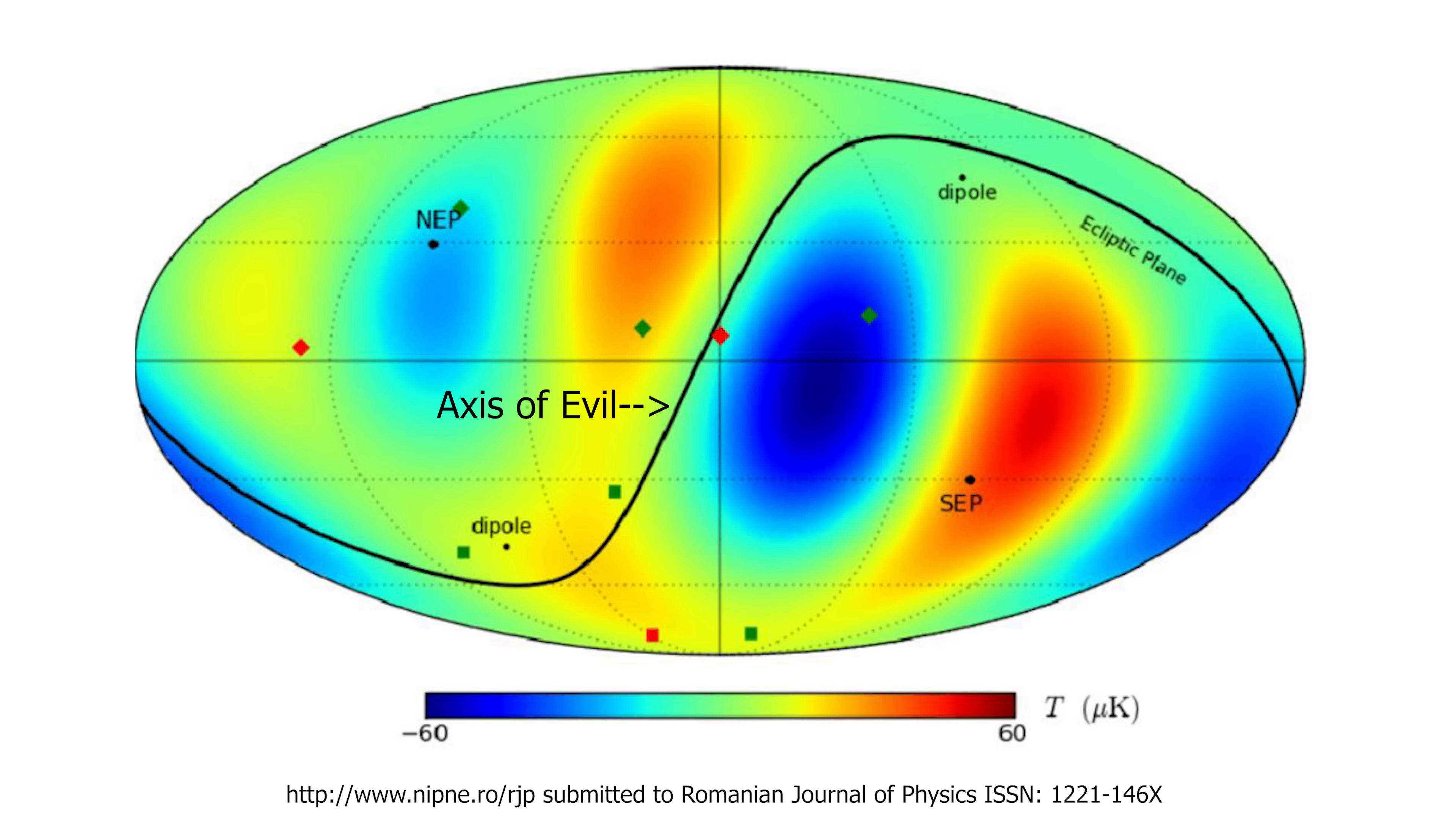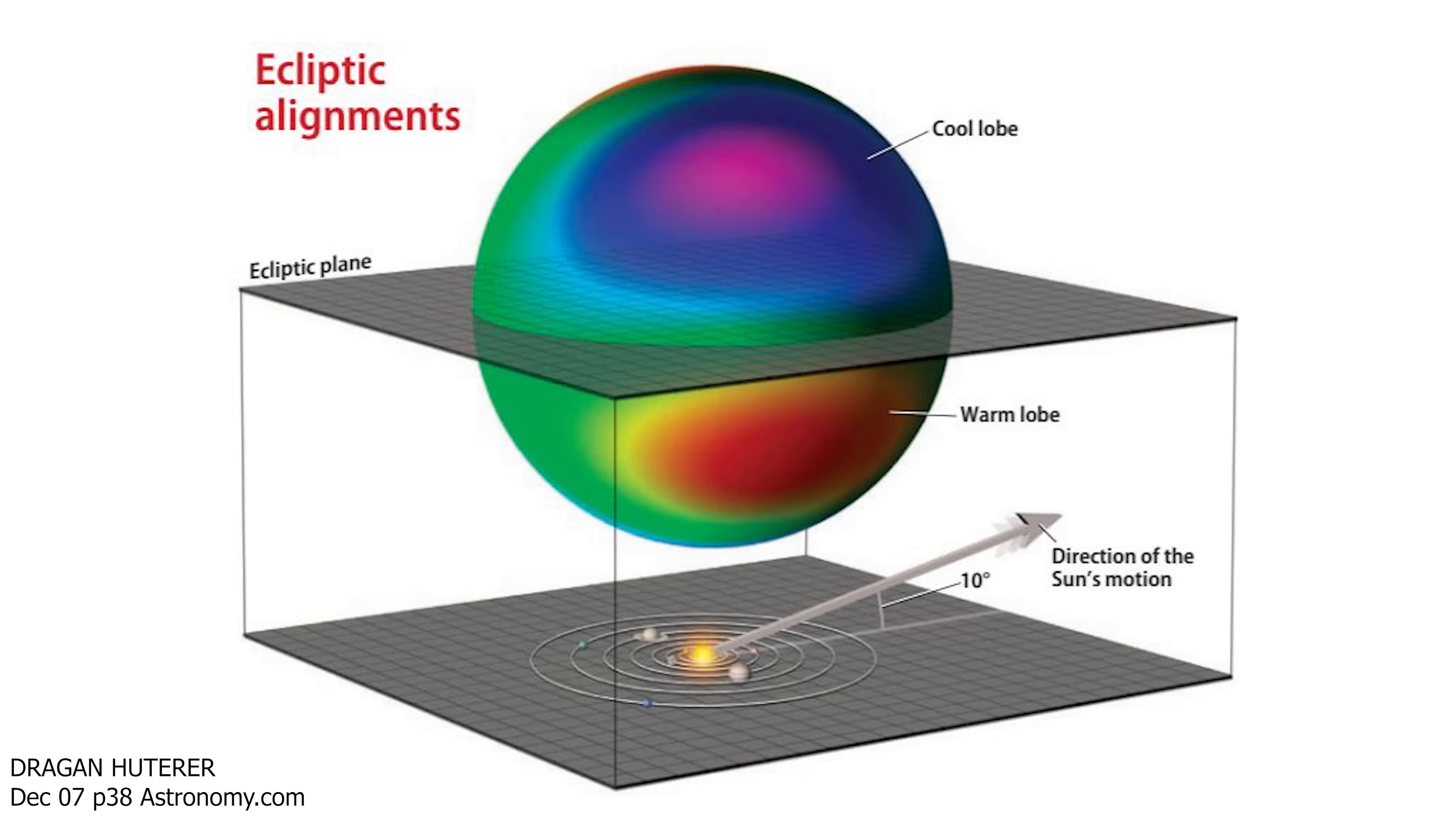Now the reason they call it the axis of evil is because it threatens to destroy all of modern cosmology as it stands. So it looks like the entire universe has a special directionality to it and it aligns exactly with the plane of our solar system. Now this seems to violate the Copernican principle which states that earth and our solar system isn't anything special in the universe. We're not the center of the universe and nothing revolves around us at all.